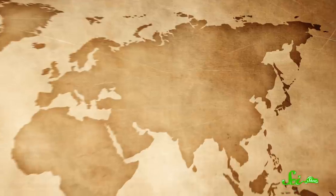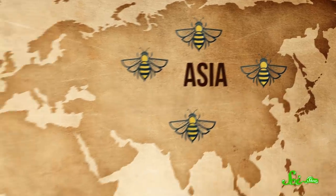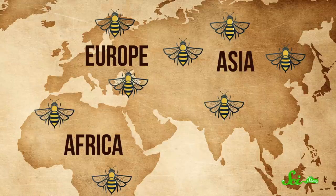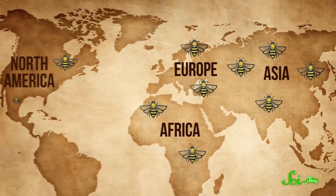Honeybees probably originated in Asia around 300,000 years ago. From there, they spread throughout Africa and Europe, mostly by human hands, arriving in North America sometime in the 17th century. You could even think of them as an invasive species in some areas, because while honeybees are good for agriculture, they're not necessarily good ecologically.